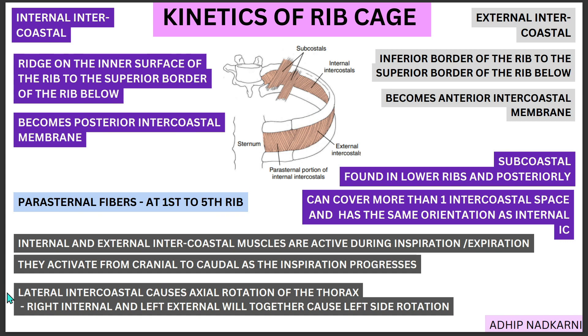Moving on to the lateral intercostal muscles: these cause axial rotation of the thorax, and the direction of rotation depends on which side the external intercostal activates. If you are rotating to the right, the right external intercostal and left internal intercostal work together. If rotating to the left, the left external and left internal work together. This reciprocal contraction of internal and external intercostal muscles creates rotation of the thorax.